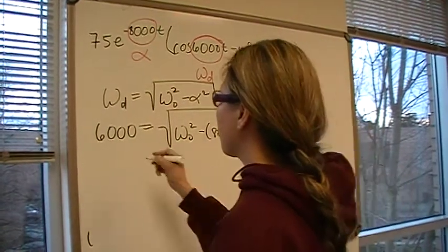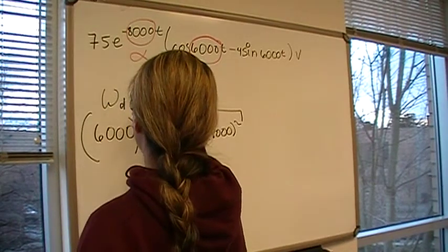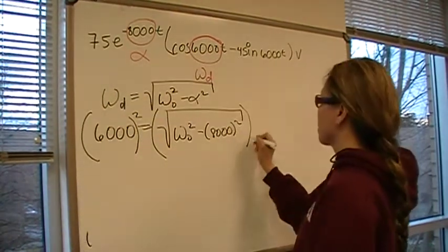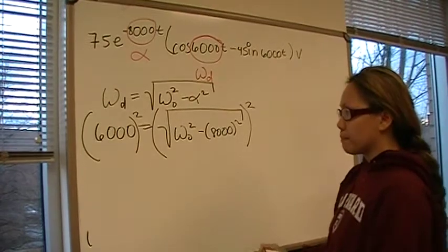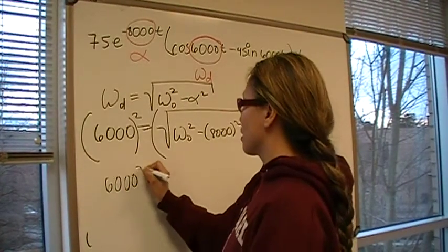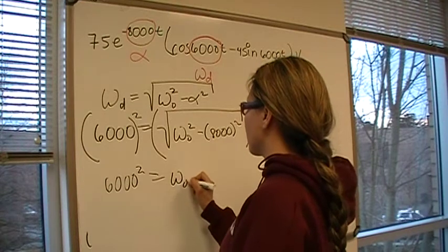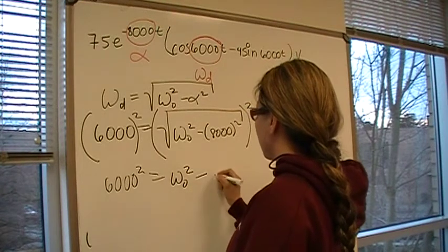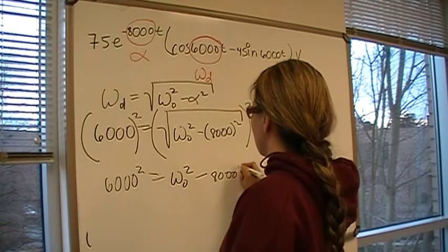I'm going to bring everything out of the radical by squaring both sides. That's going to give us 6,000 squared equals omega 0 squared minus 8,000 squared.